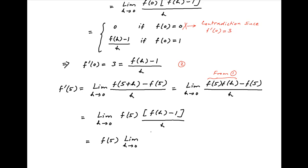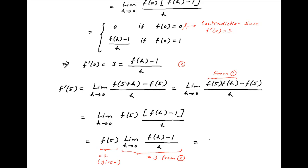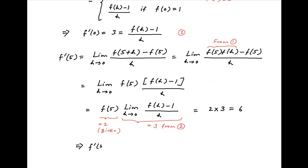From result 2, the limit as h tends to 0 of [f(h) - 1] / h equals 3, and f(5) is given to be equal to 2. Therefore f'(5) = 2 × 3 = 6. Therefore f'(5) = 6, which is the required answer.